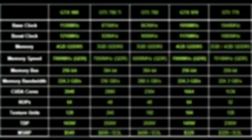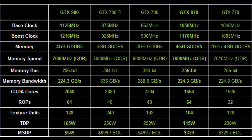We can see that the GTX 980 reference model has a much higher base clock, boost clock, and higher memory speed with more render output units compared to the GTX 780 reference model. The GTX 980 also has 4GB of video memory while the GTX 780 had 3GB. But the GTX 780 has a higher memory bus, CUDA cores, and texture units.